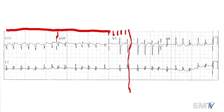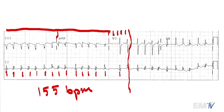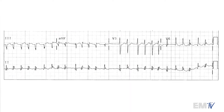Now that we've got our six-second strip, we can begin counting the QRS complexes and get our rate. I'm getting 15 and a half, so we'll call this 155 BPM. Now to identify the rhythm, the first thing I'll look at is the R-to-R interval.